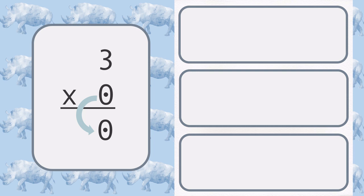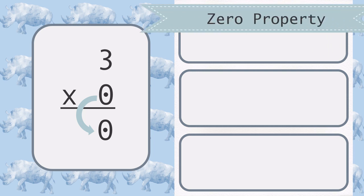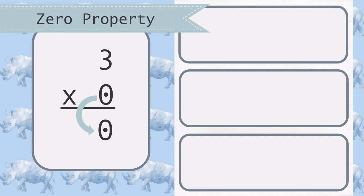3 times 0 is equal to 0. The zero property states that any number multiplied by 0 is 0.